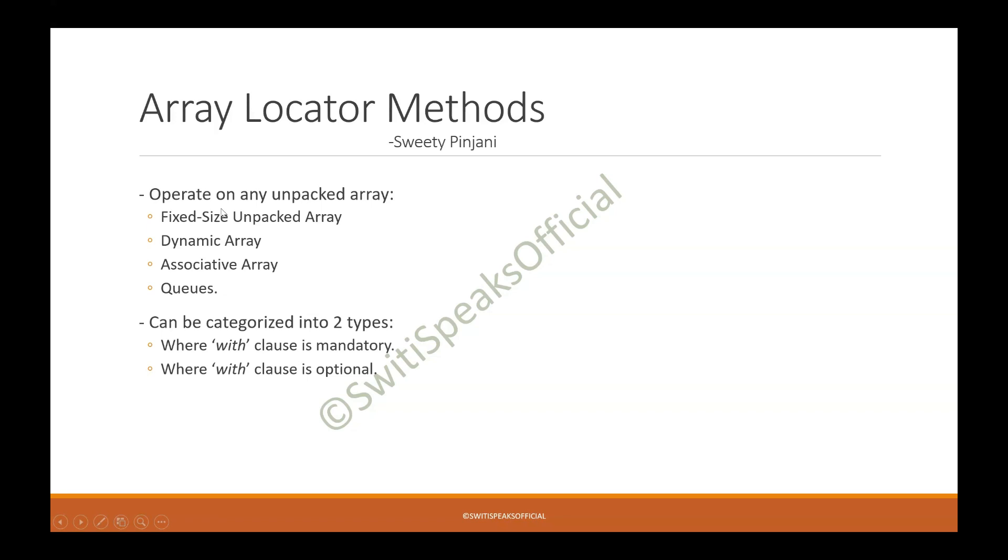These are the methods which can operate on any unpacked array. What are different types of unpacked array? There is fixed size unpacked array, dynamic array, associative array, and queues. We had covered these unpacked arrays in the previous lecture. In case you missed those videos, I will share the link in the description.